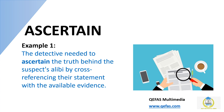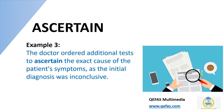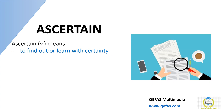Example one: the detective needed to ascertain the truth behind the suspect's alibi by cross-referencing their statement with the available evidence. Example two: before beginning the experiment, the researcher had to ascertain that all necessary safety measures were in place to avoid any accidents. Example three: the doctor ordered additional tests to ascertain the exact cause of the patient's symptoms, as the initial diagnosis was inconclusive.